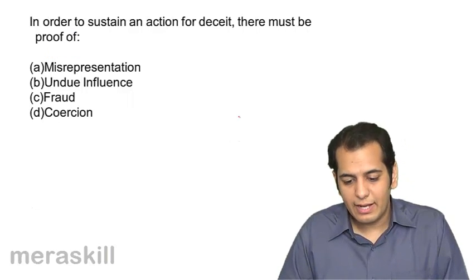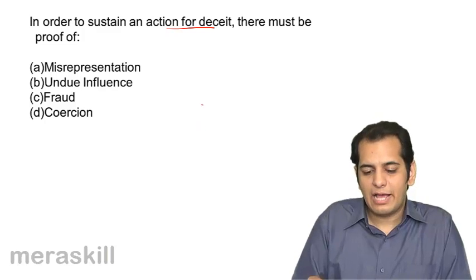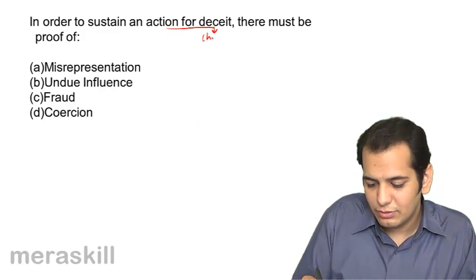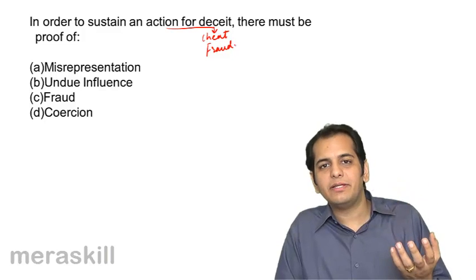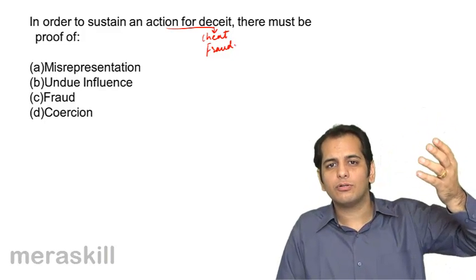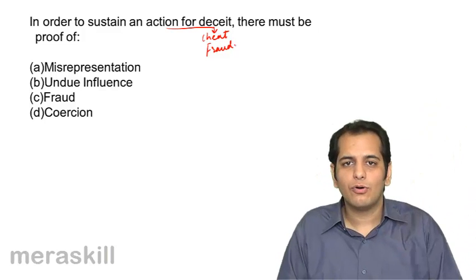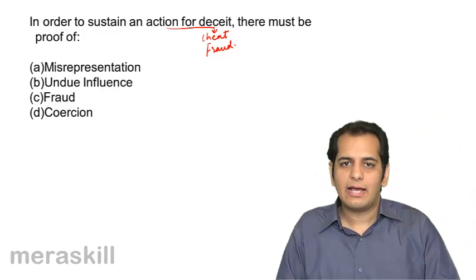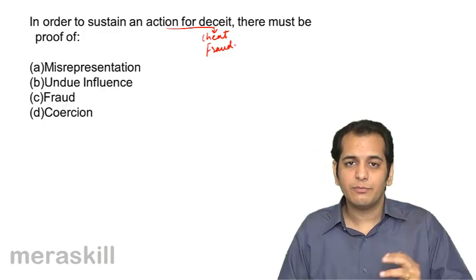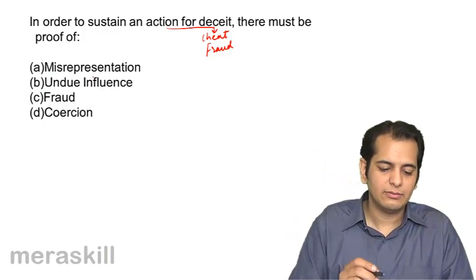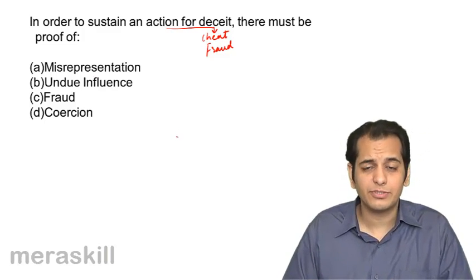In order to sustain an action for deceit, there must be proof of: A misrepresentation, B undue influence, C fraud, D coercion. An action for deceit means filing a case in court claiming that a fraud has been done against you — that you have been cheated. It is clear that there must be fraud in it. The answer is C — fraud.